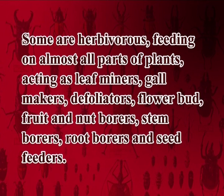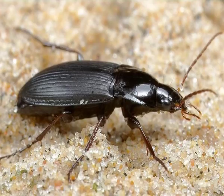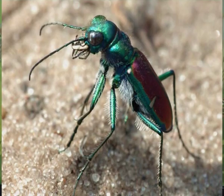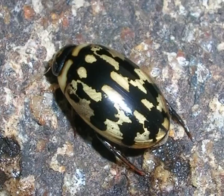fruit and nut borers, stem borers, root borers and seed feeders. They are also pests in storage, affecting grains, textiles and as museum pests affecting hides and arms of animals, etc. Many species are predaceous, particularly Carabidae, tiger beetles, Gyrinidae, Dytiscidae and some Hydrophilidae are voracious predators.